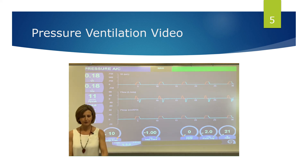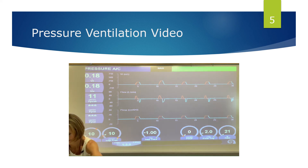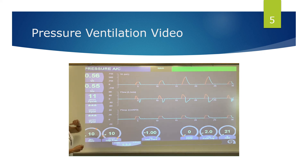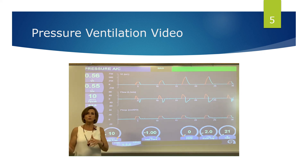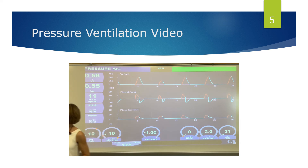I'm going to put compliance back to normal, and our volume should go back up — yeah, pretty close to what they were. Now I have normal compliance and normal airway resistance, and I'm going to simulate a mild bronchospasm — we're going to make the airway smaller and increase airway resistance.